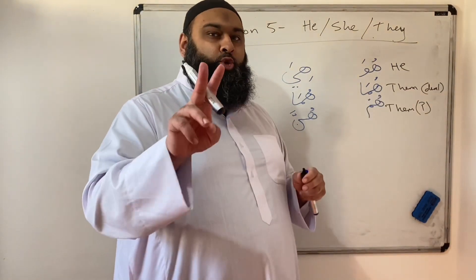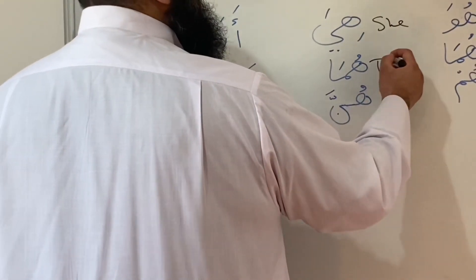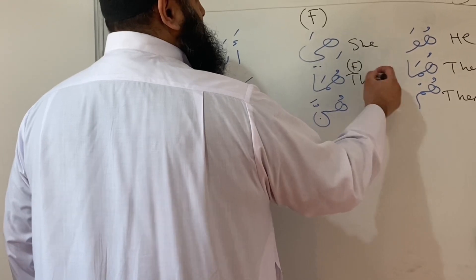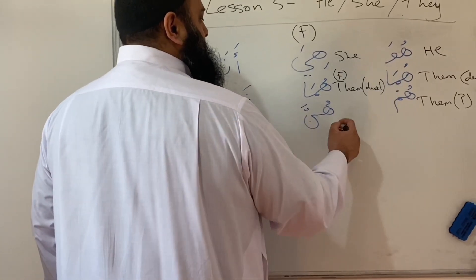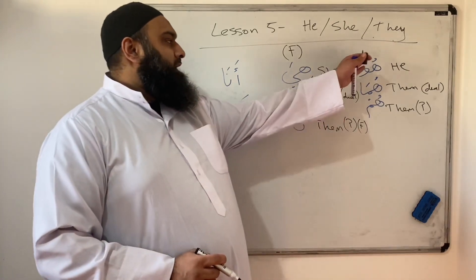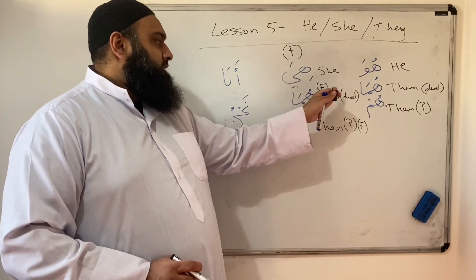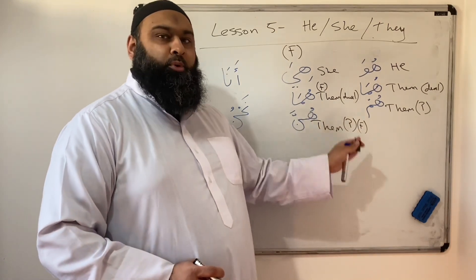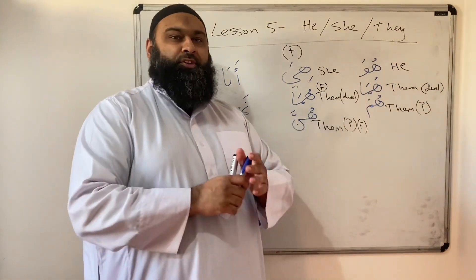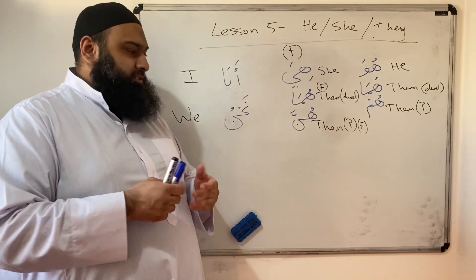Here هي means 'she' — this whole category is female. هما means 'them dual female', and هن means 'them plural female'. أنا means 'I' and نحن means 'we'. So هو هما هم is he, them dual, them plural; هي هما هن is she, them dual female, them plural female. This is third person, and أنا نحن is first person.